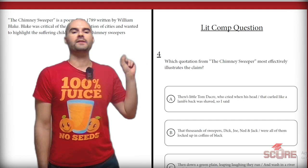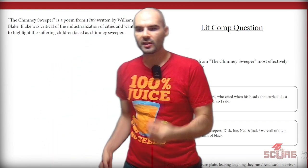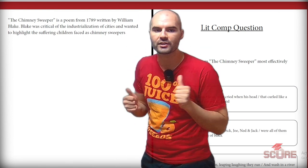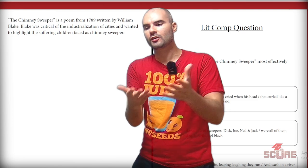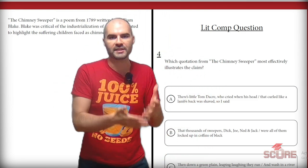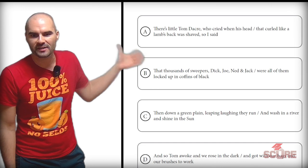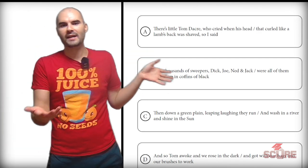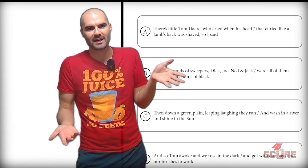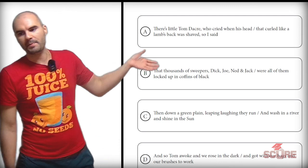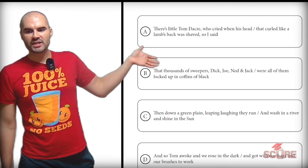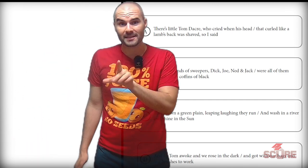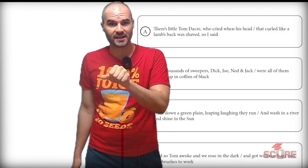Which quotation from The Chimney Sweeper most effectively illustrates the claim? The claim is that William Blake was critical of the industrialization of cities and wanted to highlight the suffering children faced as chimney sweepers. So we're just looking for a quotation that supports the idea of suffering children. Option A says: 'There's little Tom Dacre, who cried when his head that curled like a lamb's back was shaved.' He got his hair cut and was sad about it, but I don't think that's too bad. Option B says: 'Thousands of sweepers, Dick, Joe, Ned, and Jack, were all of them locked up in coffins of black.' That sounds pretty bad — coffins and children is not a good combination.